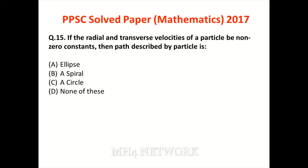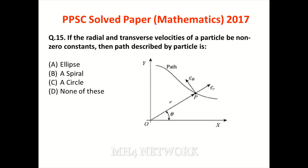Question: if the radial and transverse velocities of a particle are non-zero constant, then the path described by the particle is? Observing point 0 se agar path generate ho raha ho toh radial velocity path ki polar form ka time derivative hai, aur transverse velocity theta ke time derivative se milti hai — yeh dono ek doosre ke perpendicular hote hain.